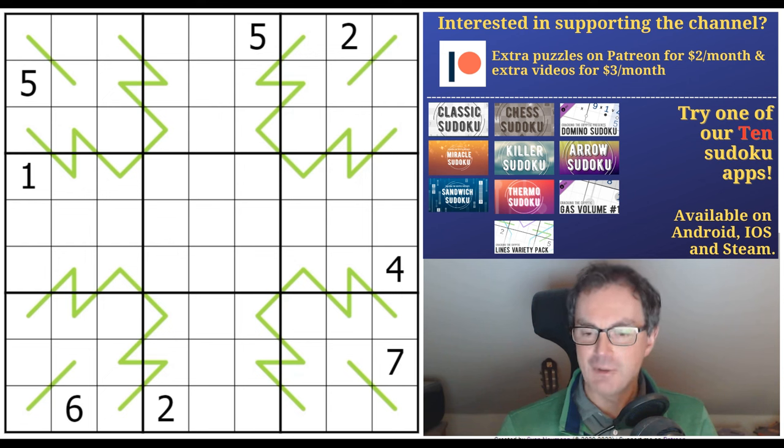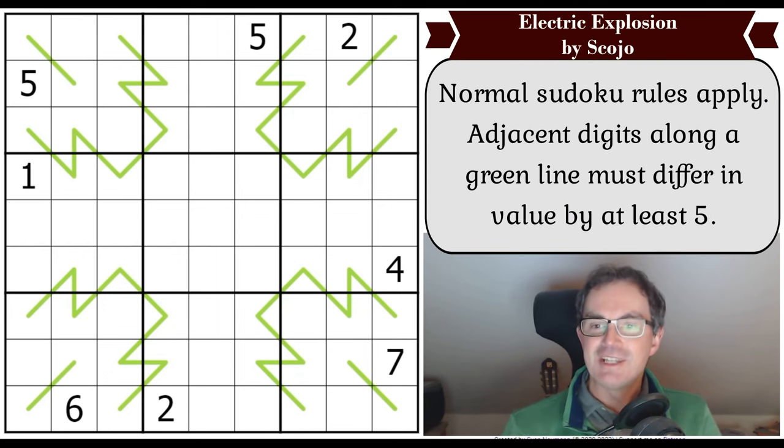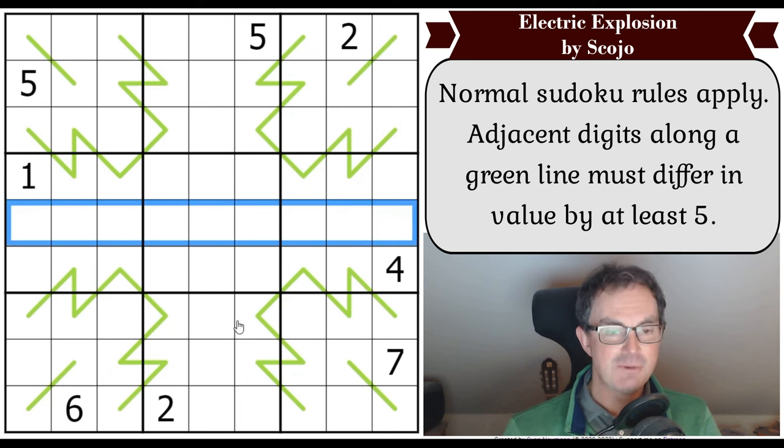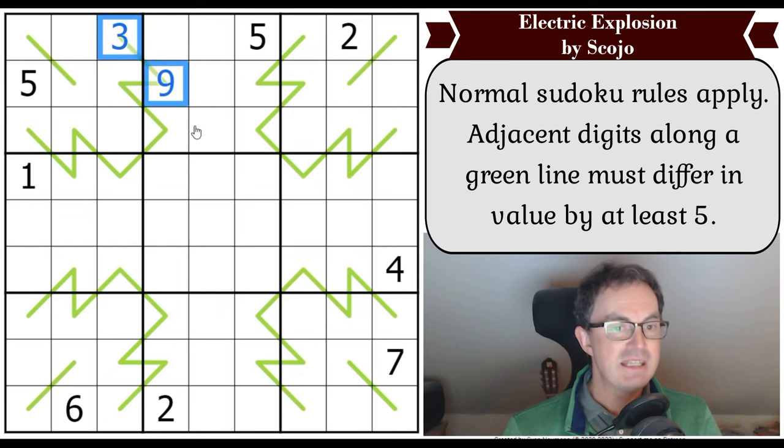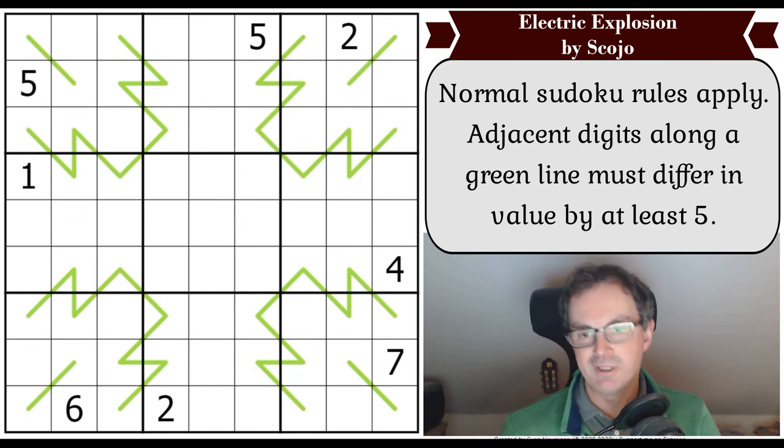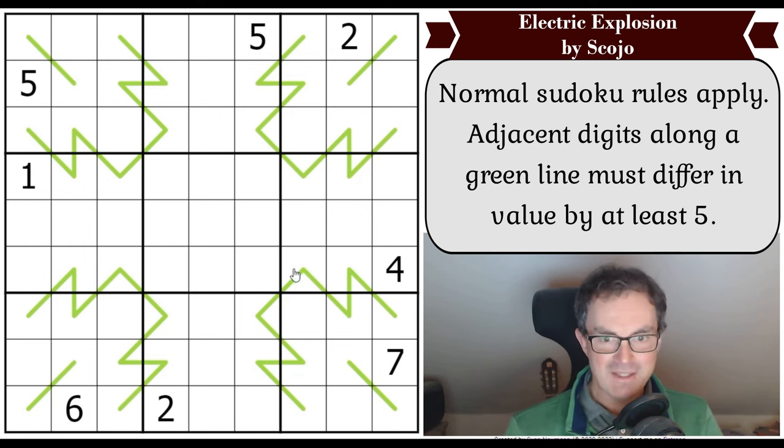And with all that said and done, let us have a look at the rules to Electric Explosion and see what Scojo has in store for us. Normal Sudoku rules apply, so the digits one to nine need to appear in every row, column, and three by three box just once each. And adjacent digits along a green line must have a difference of at least five. So if that cell was a three, this square here would have to either be eight or nine.